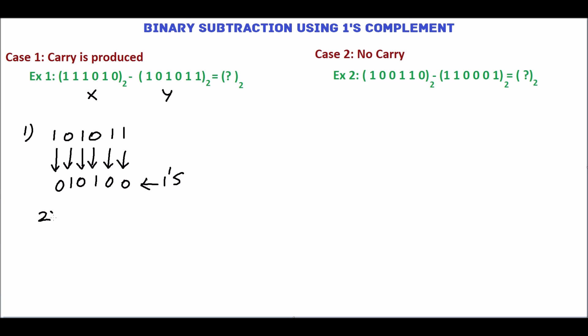Then add x and 1's complement of y which is 010100. Add this: 0, 1 plus 0 is 1, 0 plus 1 is 1, 1 plus 0 is 1, 1 plus 1 is 0 carry 1, 1 plus 1 is 0 carry 1.